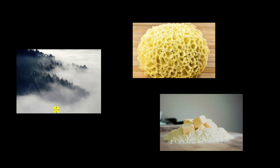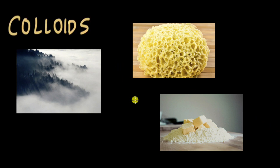What do fog or mist, a sponge, or butter have in common? It turns out all of these substances are colloids. But they are so different from each other — so does that mean there are different types of colloids? Yes, and in this video we will look at all the different types of colloids and many examples of colloids we see around us.